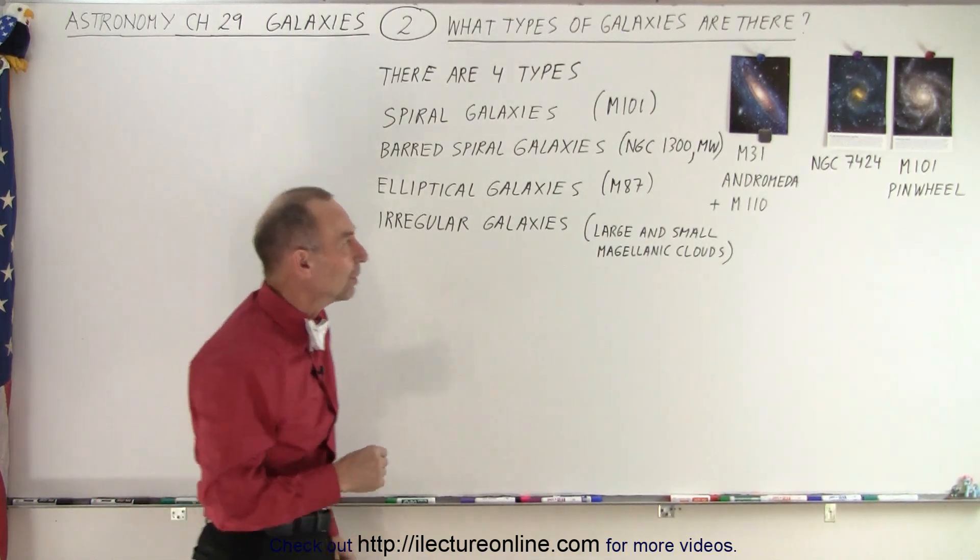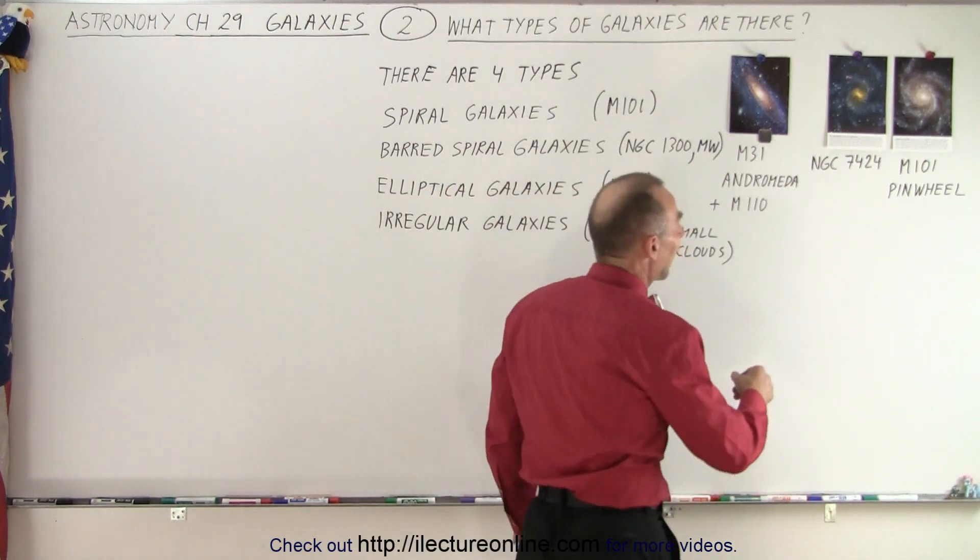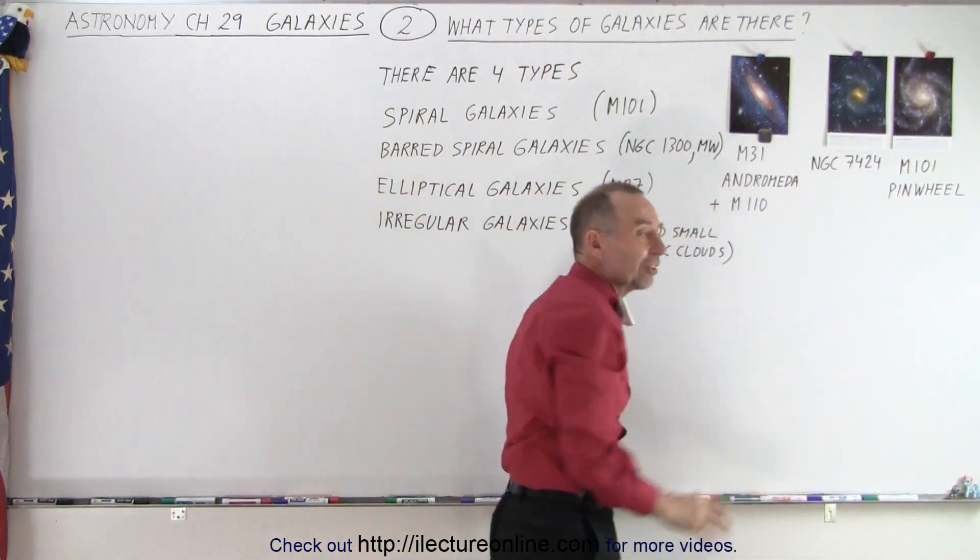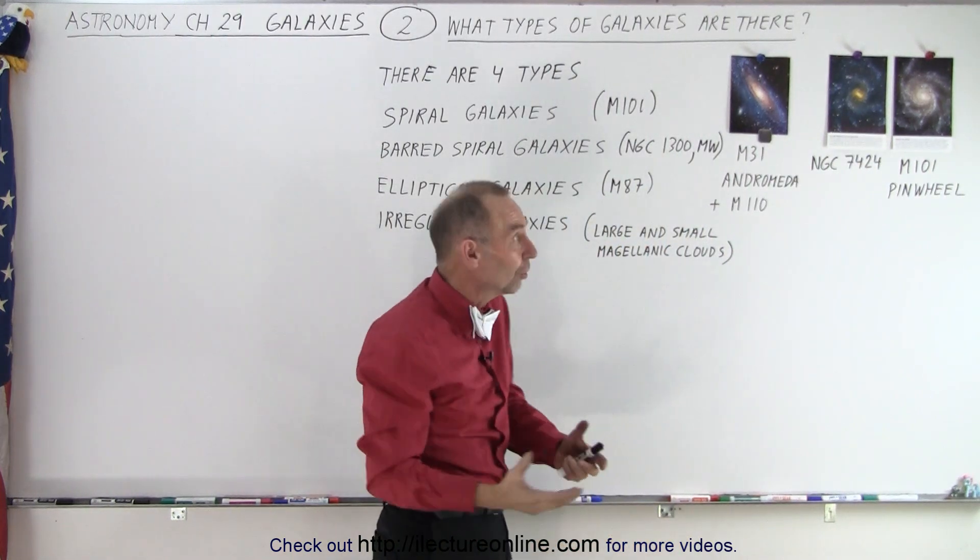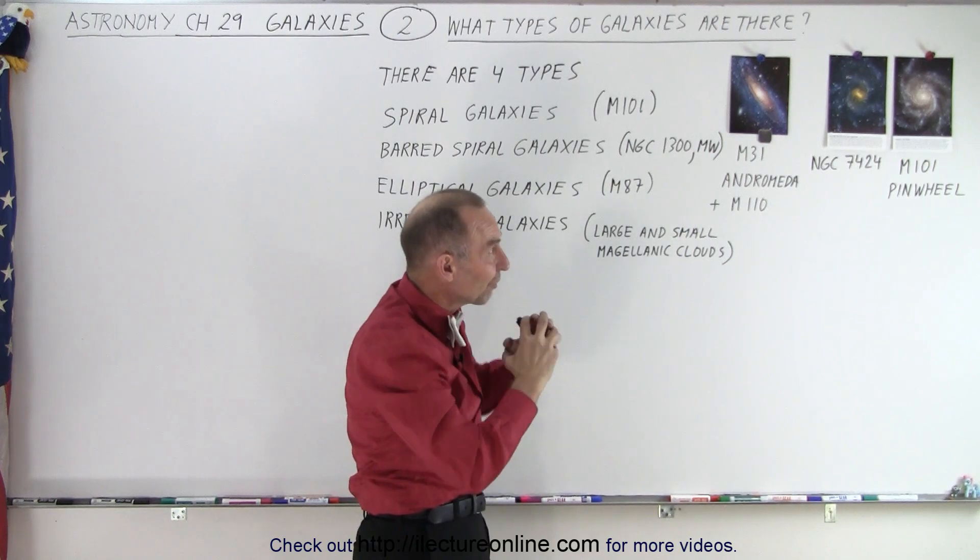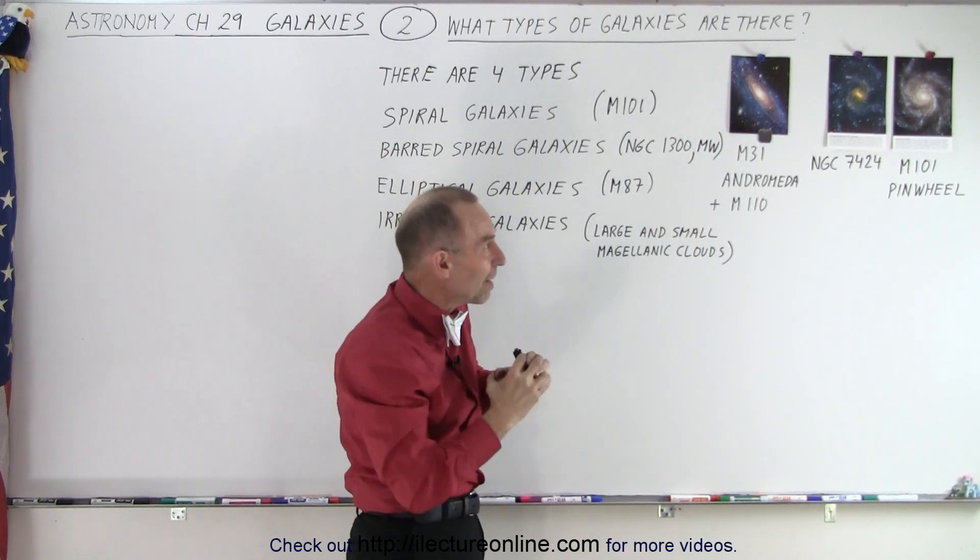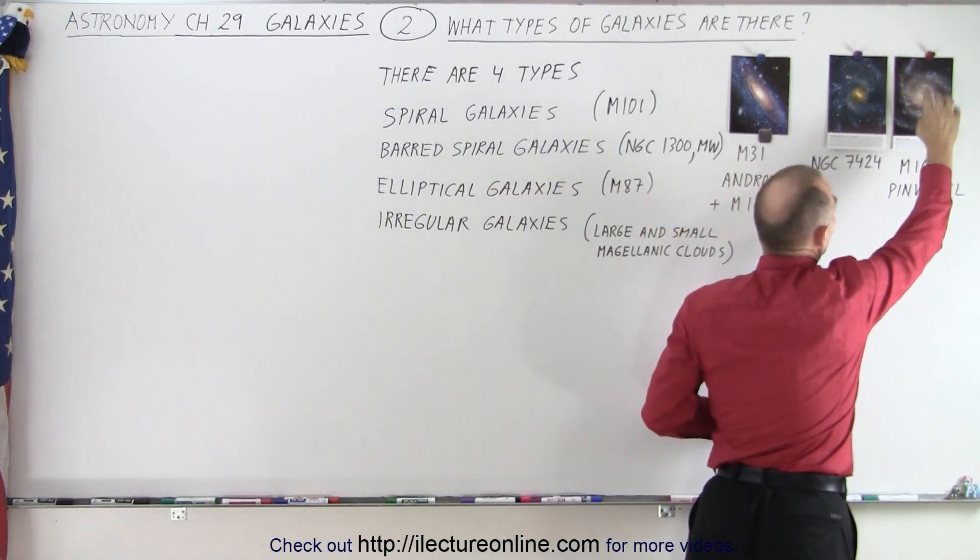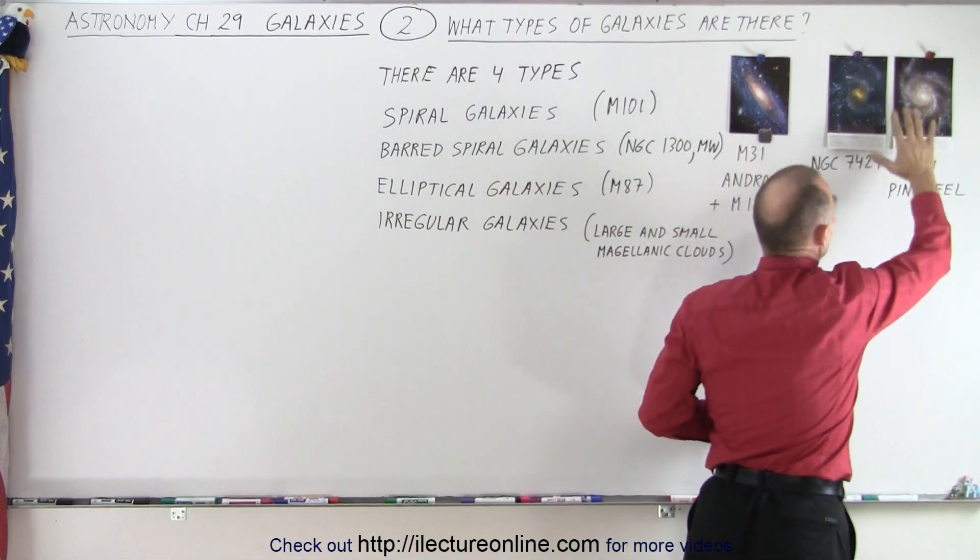The difference between the two: here we have some beautiful pictures. M101, known as the Pinwheel Galaxy, is a beautiful example of a typical spiral galaxy. We have a central bulge that seems to be either spherical or elliptical shape and have these beautiful spirals that go out from the central bulge in all directions.